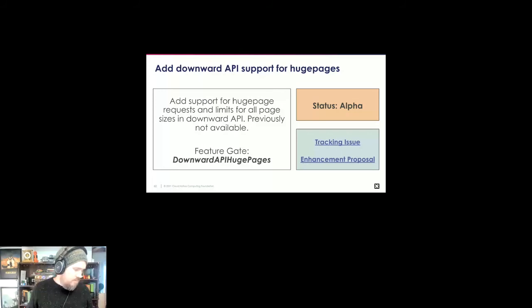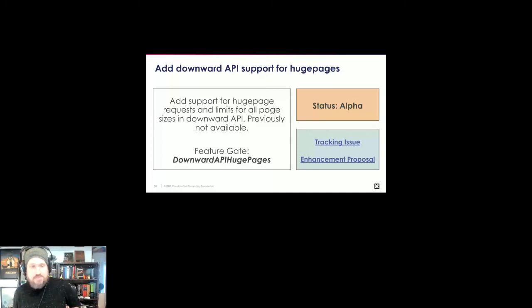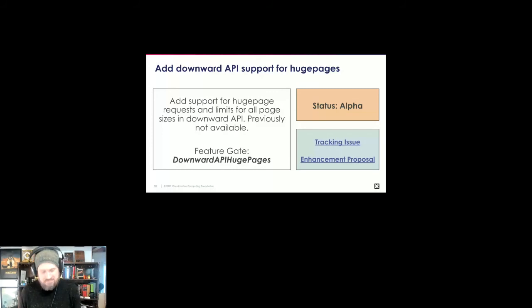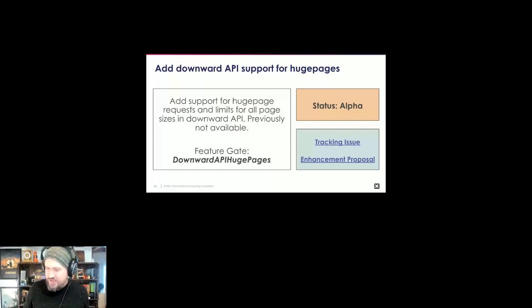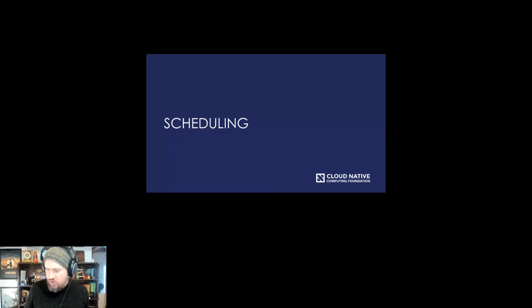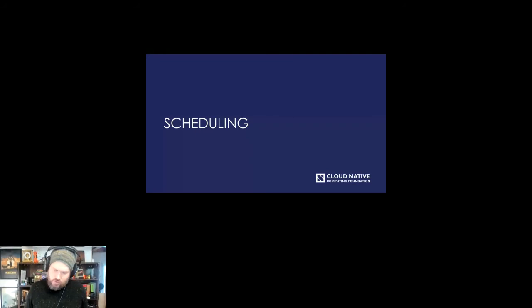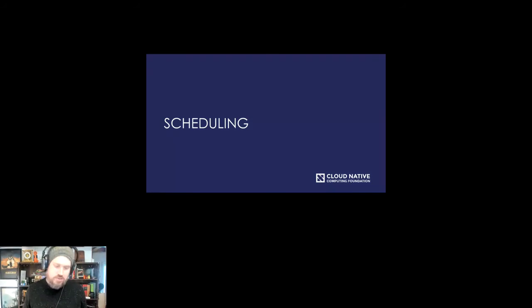SIG node had five alpha, five GA, and three beta enhancements — a tremendous amount of work for one of the busiest SIGs with the most requests. And when those things go through, it's not just SIG node reviewing — there may be API reviews, storage reviews, and more. It's really a team effort, so kudos to everyone involved.